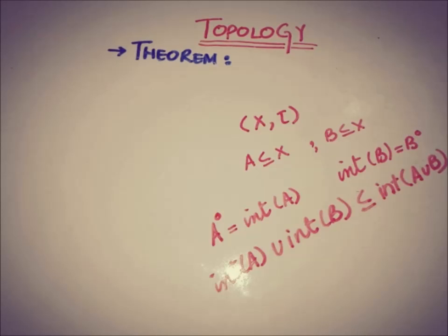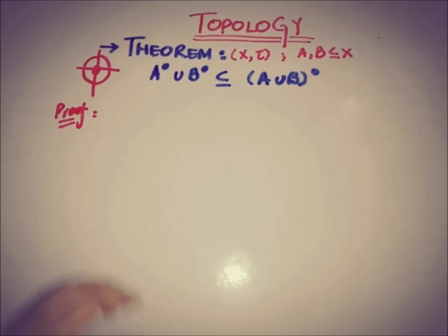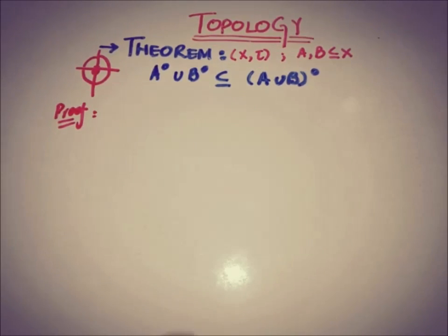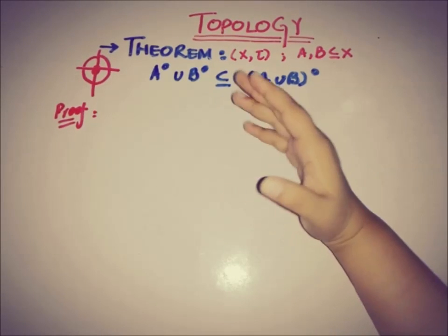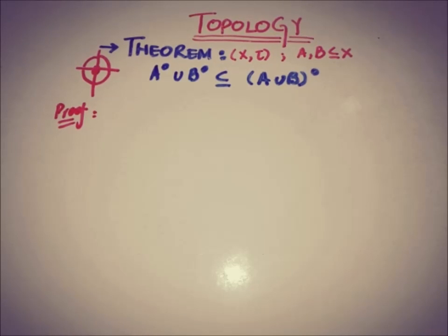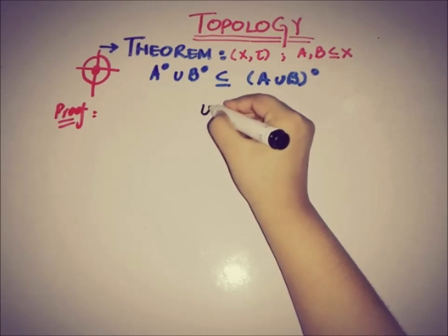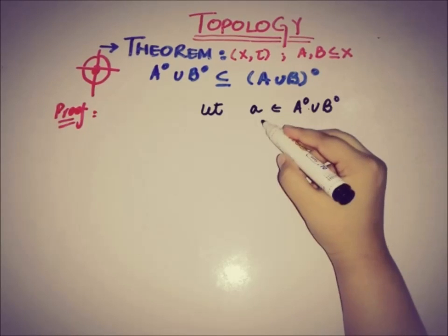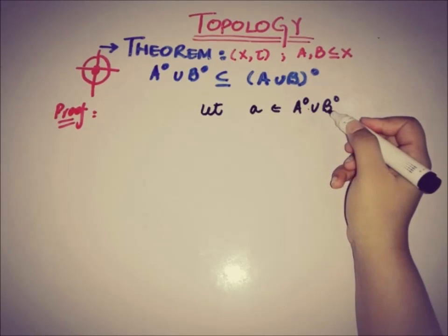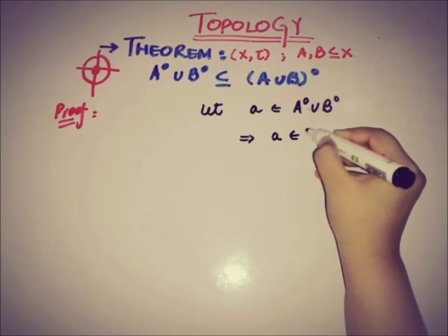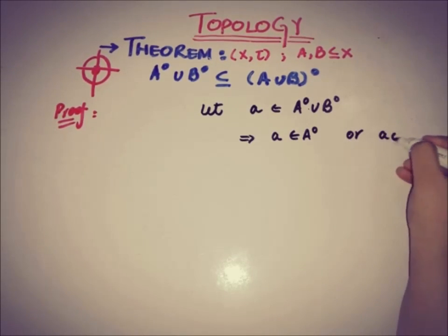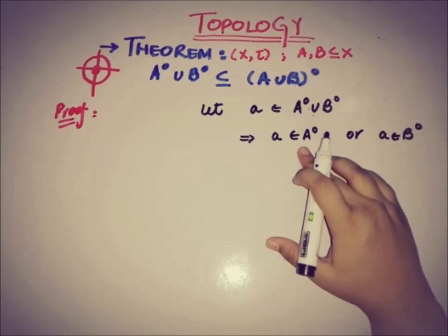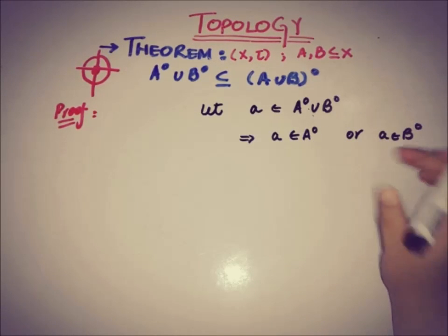So let's start proving it. We will start the proof by taking an element of A-interior union B-interior, and in the end we will prove that that element is also a member of (A∪B)-interior. So let's take an element: let a be an element of A-interior union B-interior. Because a is a member of A-interior union B-interior, this implies that a belongs to A-interior or a belongs to B-interior because of the union.